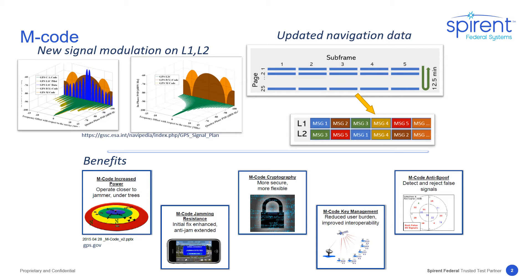The M-code signal introduces a new navigation data message structure with greater flexibility than the rigid legacy navigation data method of subframes and pages repeating every 12 and a half minutes. M-code provides higher power levels to further improve jam resistance, and it uses improved and more flexible cryptography, making it more secure.